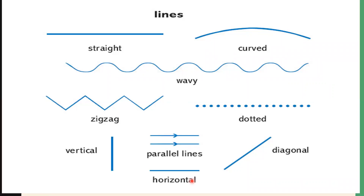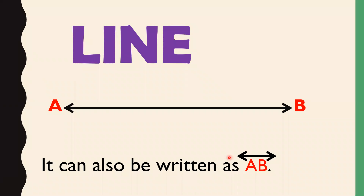Now let me explain more about a line. Here you can see a line, and we have labelled it as A and B. A line has arrows on both sides — on the left-hand side and the right-hand side. It can also be written as AB with a double-headed arrow drawn on the upper part.